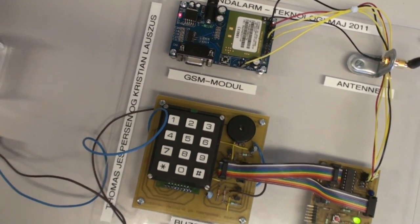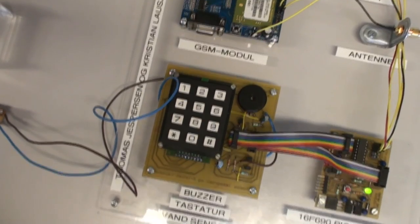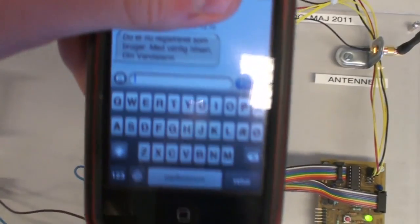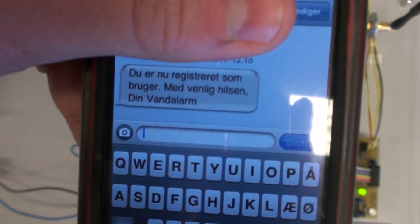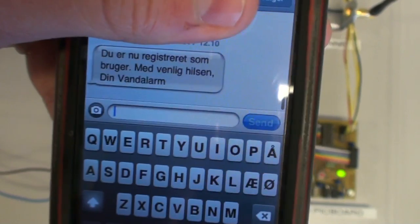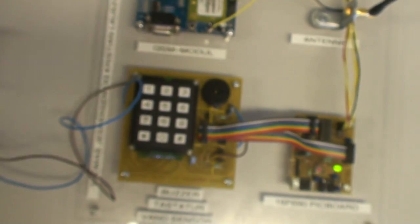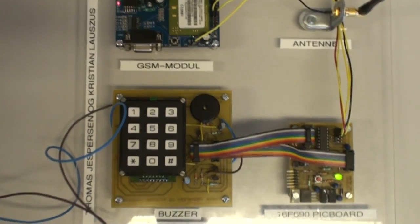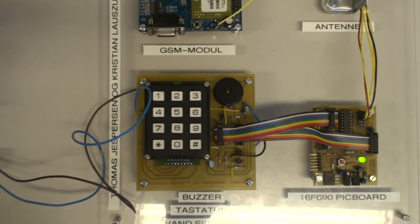On the telephone then we can see the SMS has been received. Here it says you are now registered as a user, kind regards your water alarm. So now we got a confirmation SMS from the alarm telling us that our number has been saved.